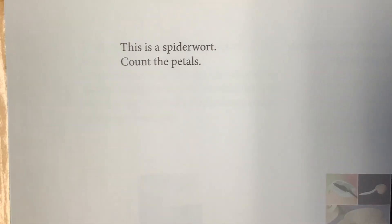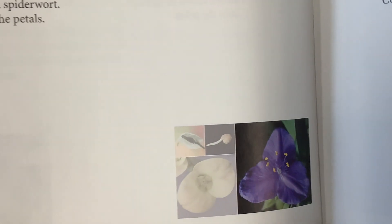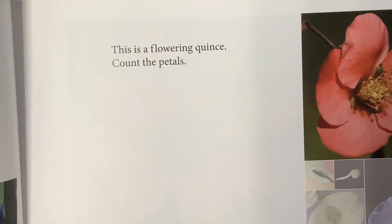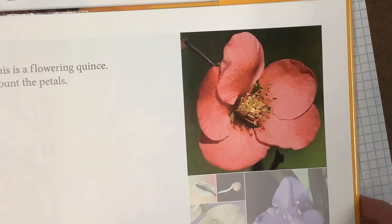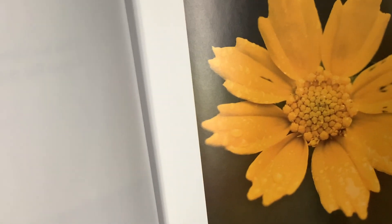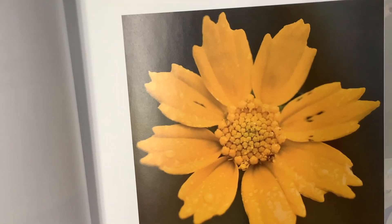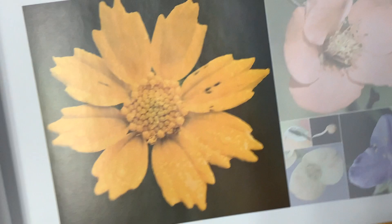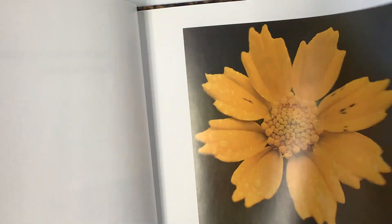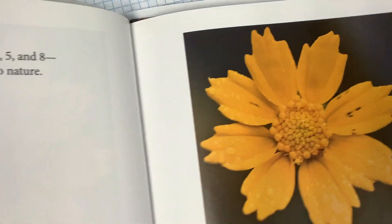This is a spiderwort - count the petals: three. Notice a pattern. This is a flowering quince - count the petals: five. You're seeing a pattern? This is a cosmos - count the petals: eight. Notice they're making a cool thing - we're actually going to make that in a little while. The number of petals on these flowers - one, two, three, five, and eight - have a special relationship to one another and to nature.